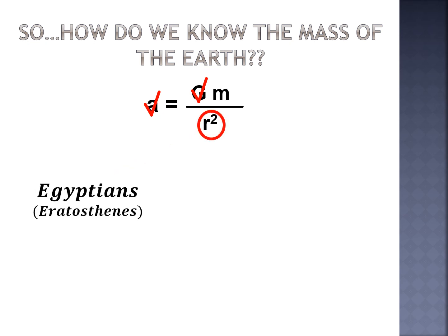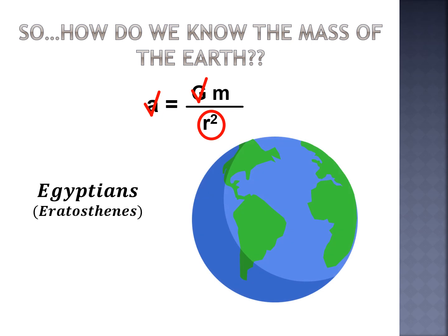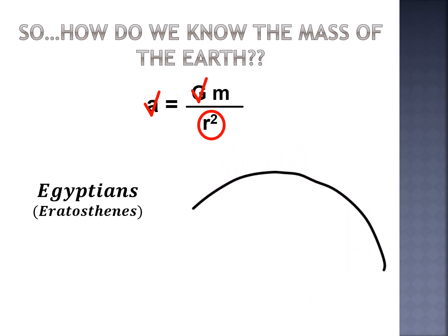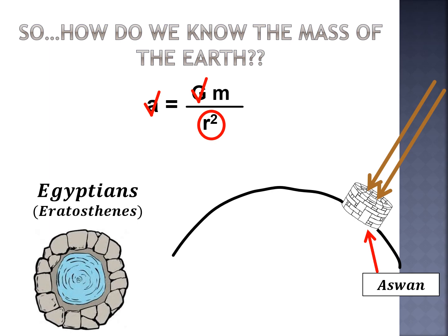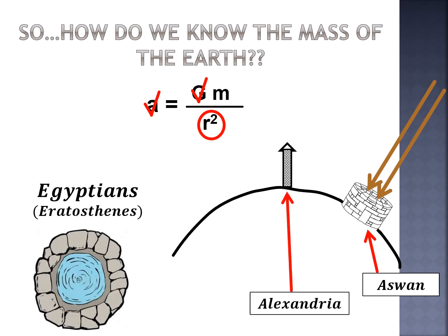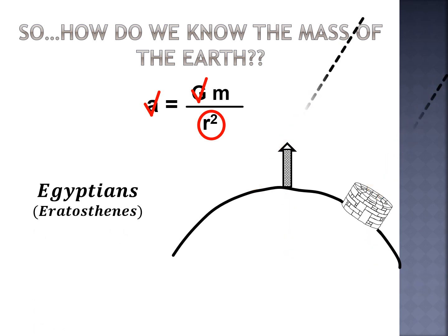The next part of the equation comes from an Egyptian named Eratosthenes. He traveled between two towns — Alexandria and Aswan. He noticed that shadows differed between the two places, indicating Earth's curvature. In Aswan, at a certain time of year, sunlight shone straight down into a well. He then traveled north to Alexandria and noticed that the same light cast a shadow there.